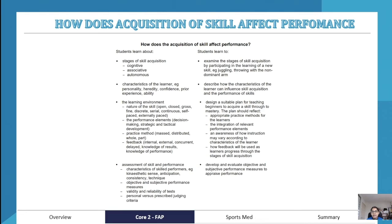With that, you should be able to describe how the characteristics of a learner can influence skill acquisition and performance. We've then got the learning environment, looking at the nature of the skill itself, performance elements, practice methods of massed, distributed, whole and part, and finally feedback. You should be able to design a suitable plan for teaching beginners to acquire a skill.